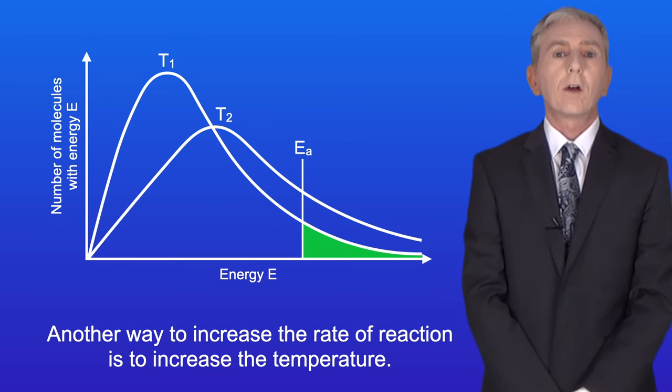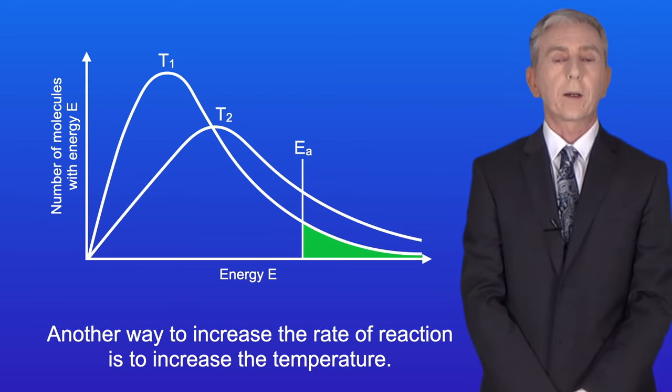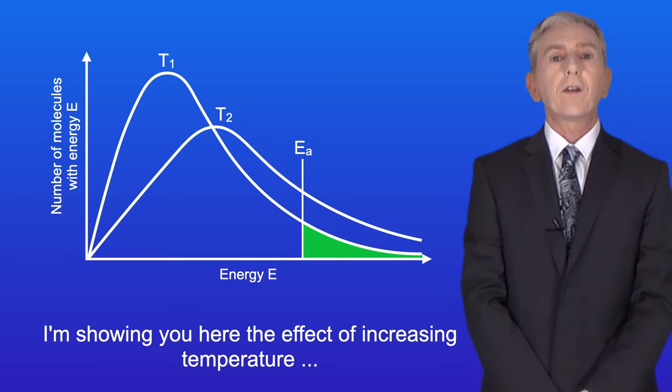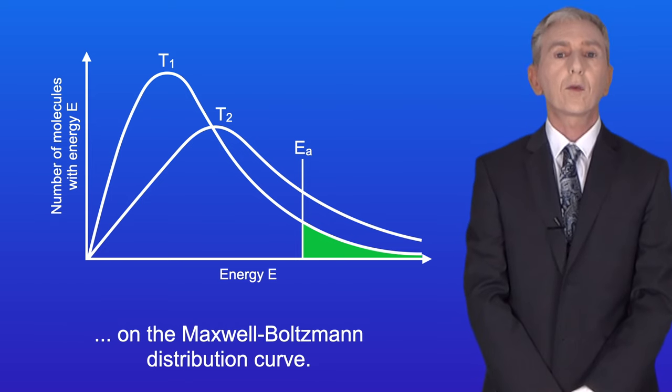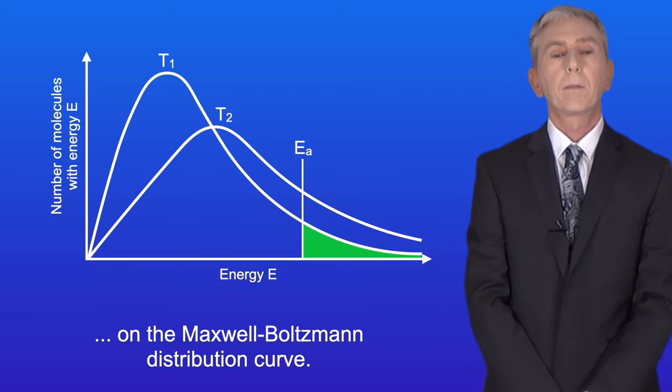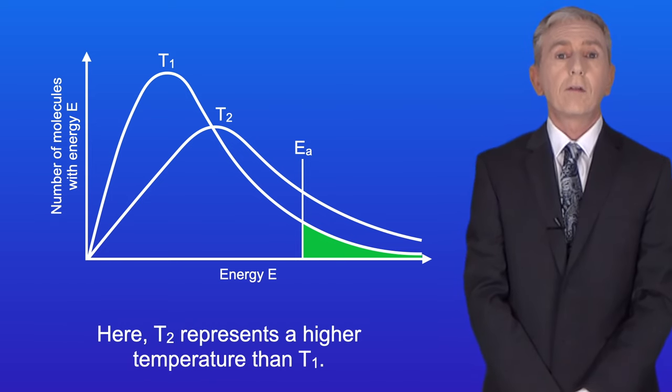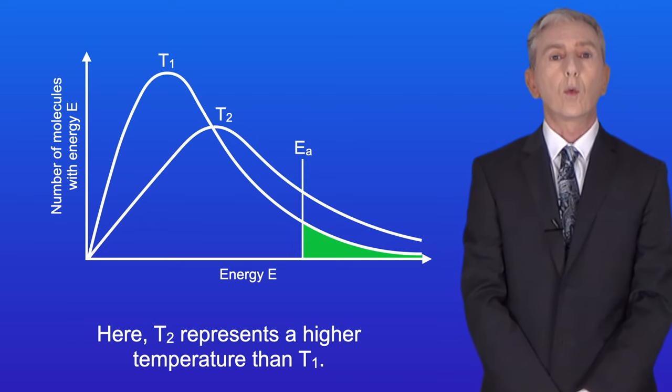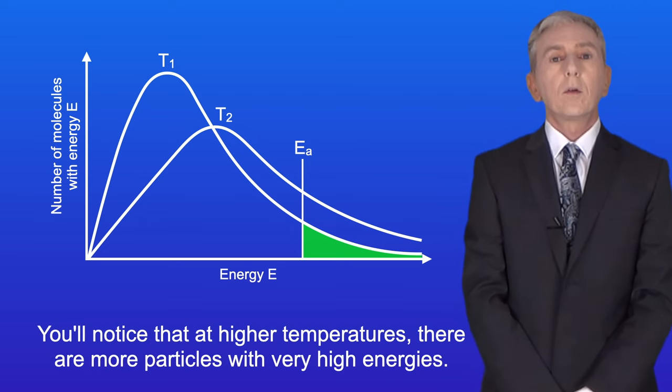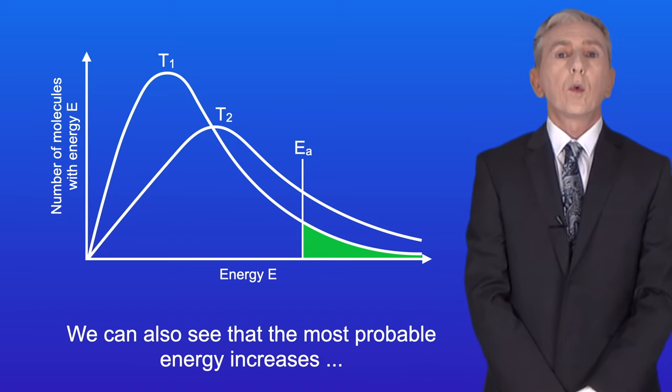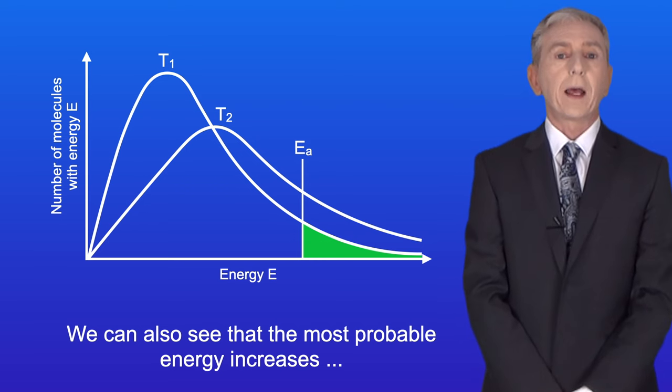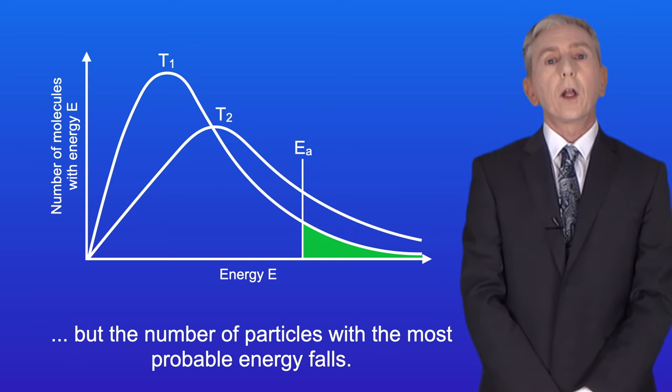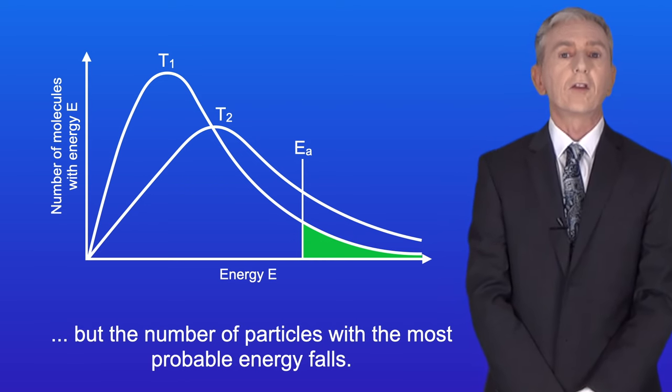Now another way to increase the rate of reaction is to increase the temperature. I'm showing you here the effect of increasing temperature on the Maxwell-Boltzmann distribution curve. Here T2 represents a higher temperature than T1. You'll notice that at higher temperatures there are more particles with very high energies. We can also see that the most probable energy increases, but the number of particles with the most probable energy falls.